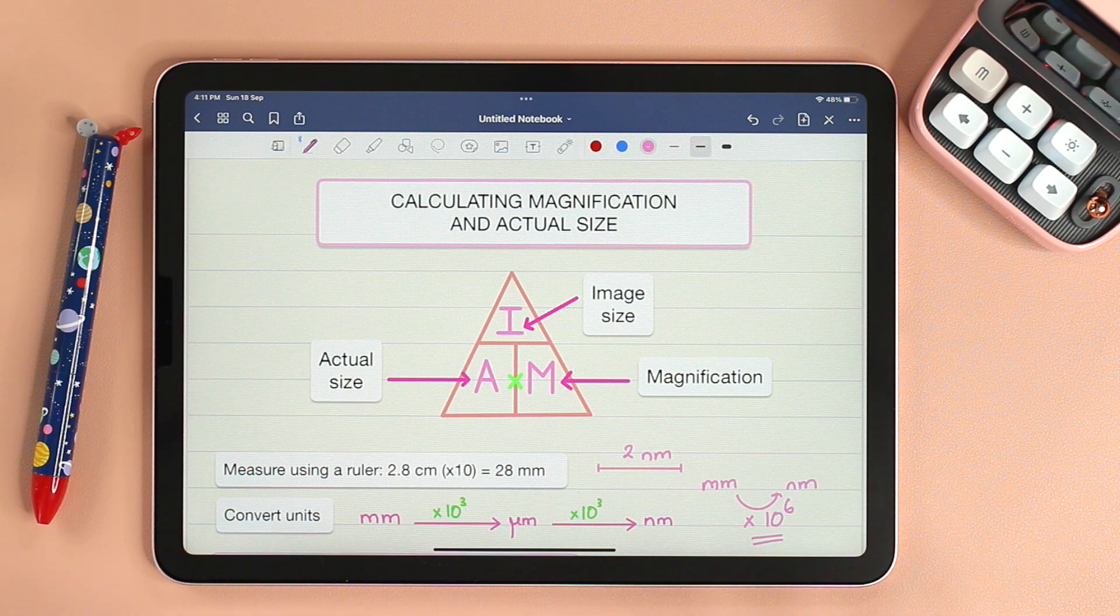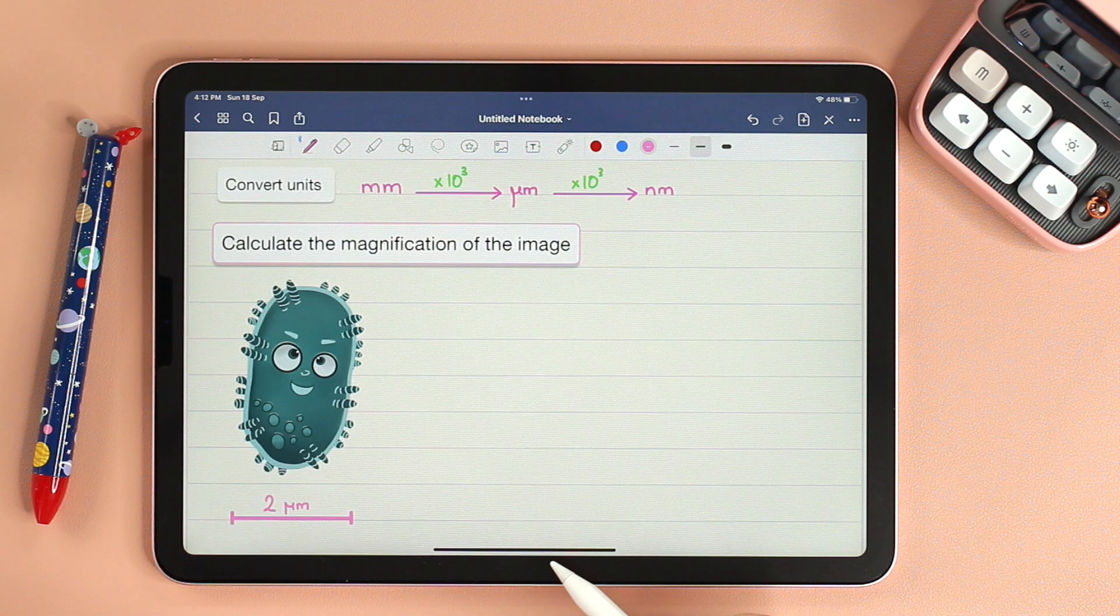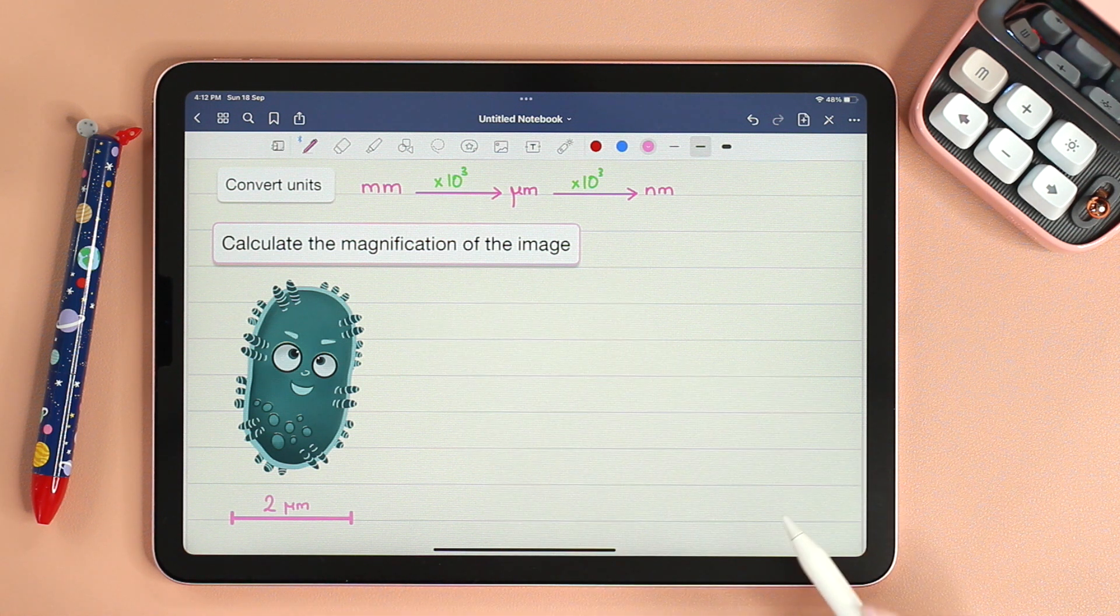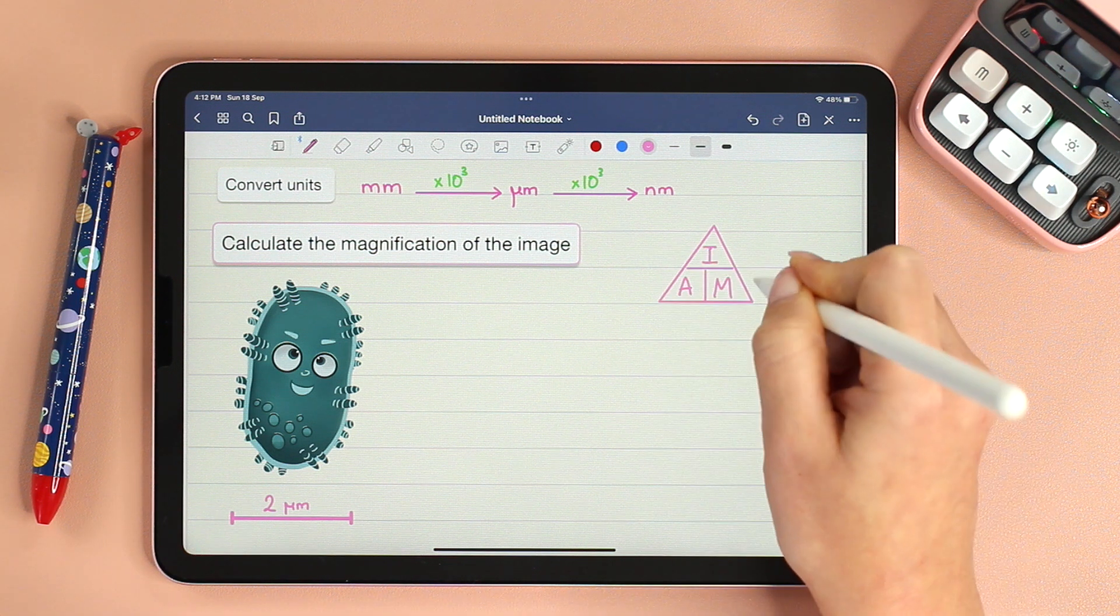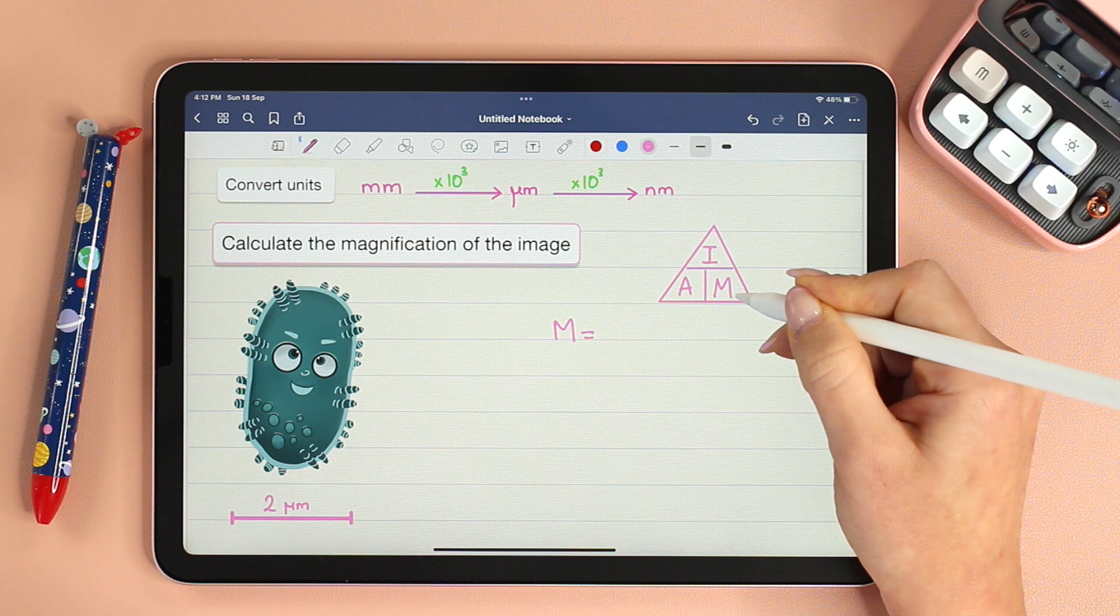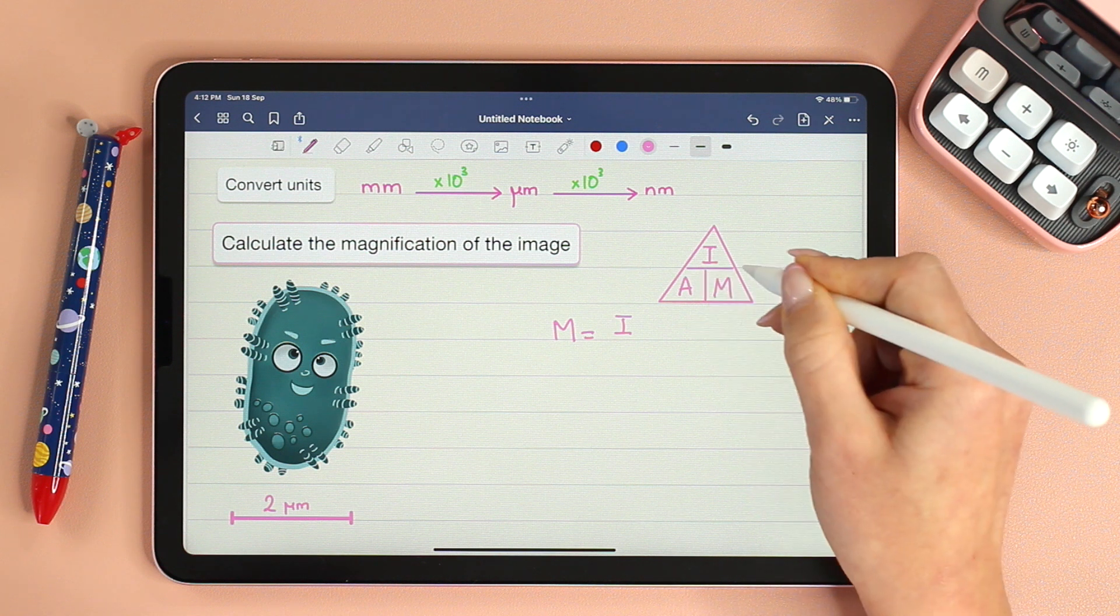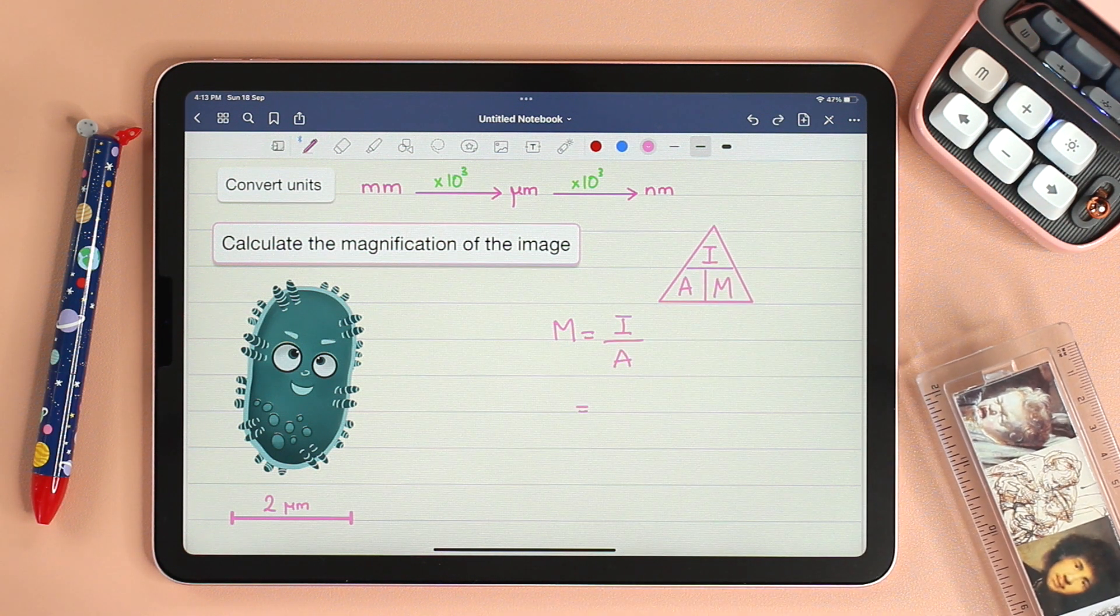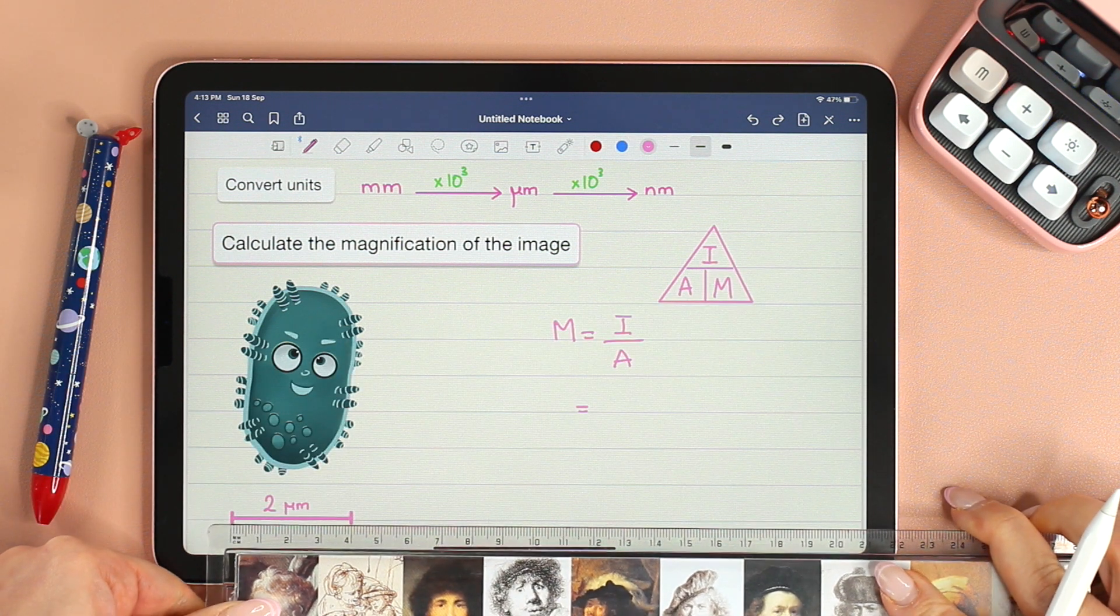Let's explain all this by actually solving the questions. We will solve two questions. The first question says calculate the magnification of the image. First things first, let's draw the triangle. To find M, magnification, we will need I, image size, divided by A. I is the size of the image. For that I will need the ruler. I will place it on the scale bar.